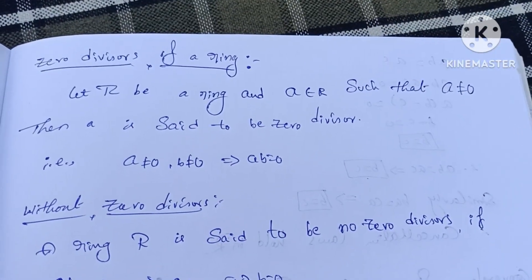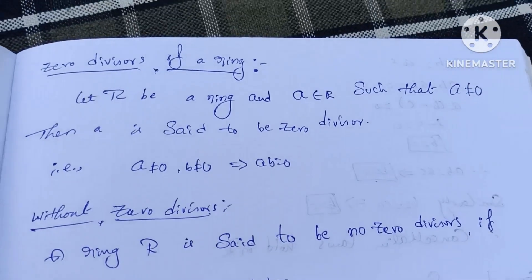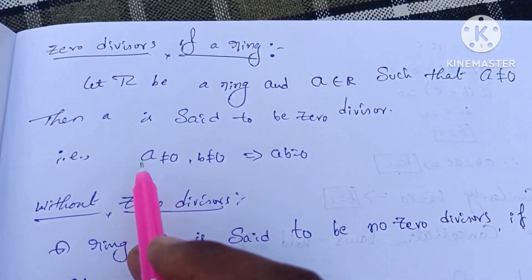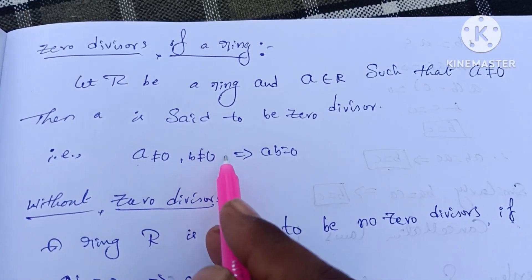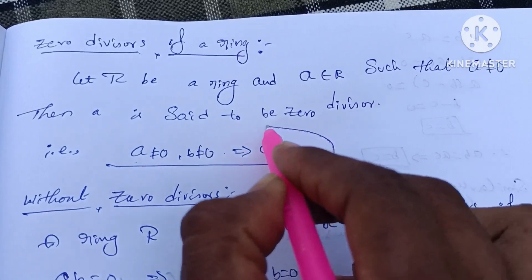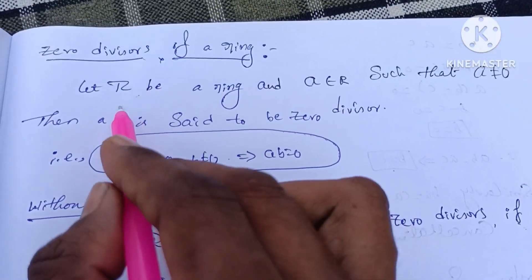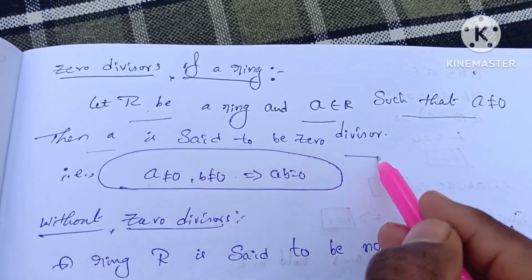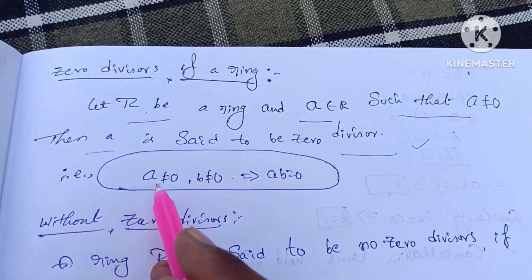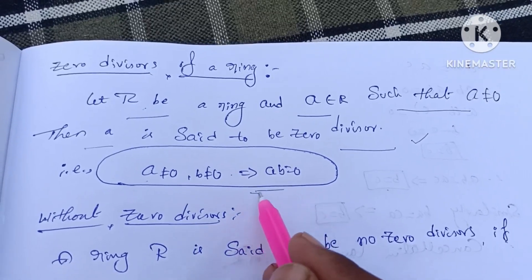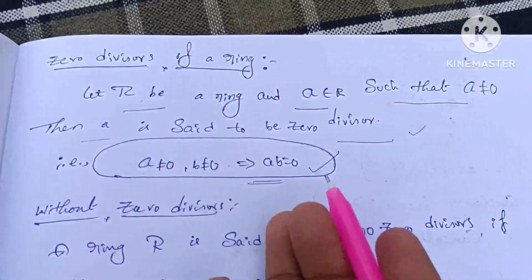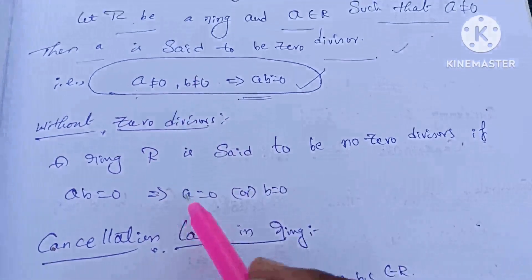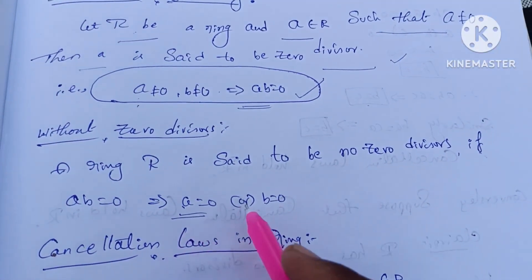Without zero divisors, let's get cancellation laws. First, zero divisors of a ring means a is not equal to zero and b is not equal to zero. If ab is equal to zero, that is a zero divisor. Let R be a ring and a belongs to R such that a is not equal to zero, then a is said to be a zero divisor.